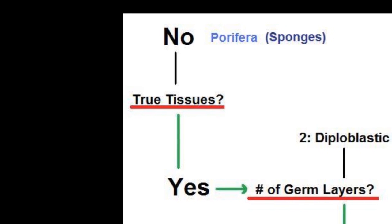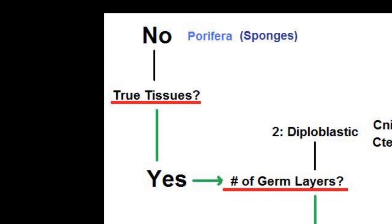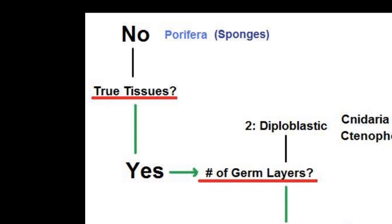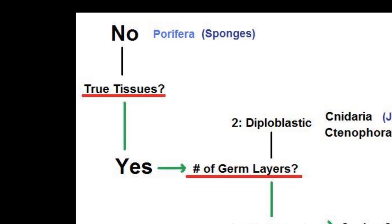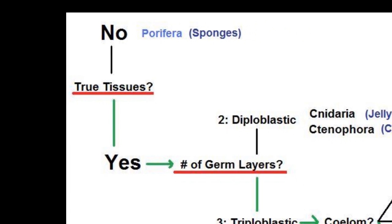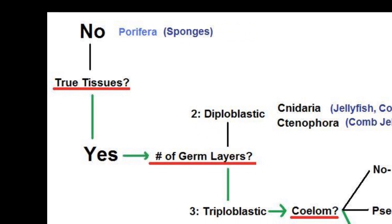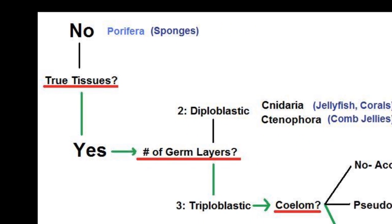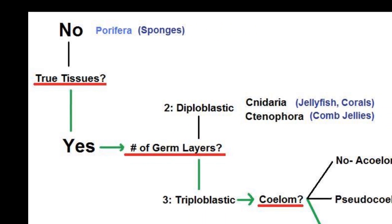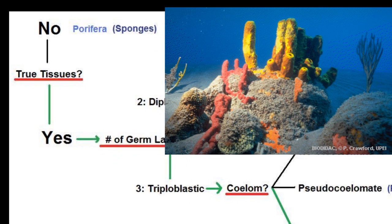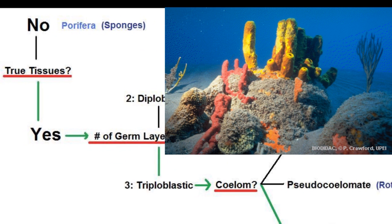The very first division that one can make when examining the tree of life is whether or not an organism has true tissues or not. As far as animals are concerned, if an organism does not have true tissues, it belongs in the phylum Porifera — that is, sponges. Every other organism in the animal kingdom has true tissues. So we move those over to the right.